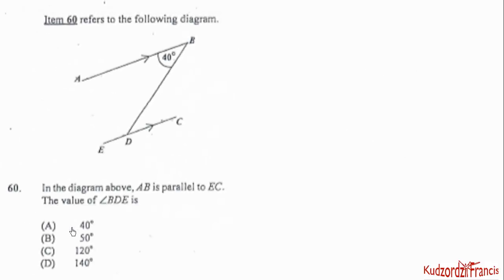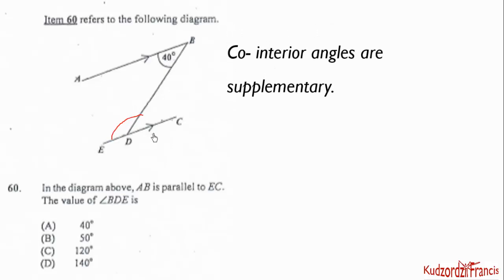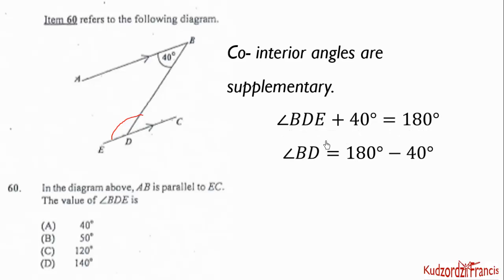The final question for January 2018 paper one: In the diagram, AB is parallel to EC. The value of angle BDE is what? Angle BDE and the 40-degree angle are same-side interior angles, which always add up to 180 degrees. So angle BDE plus 40 equals 180, giving angle BDE equals 180 minus 40, which equals 140 degrees. The correct answer is 140 degrees.